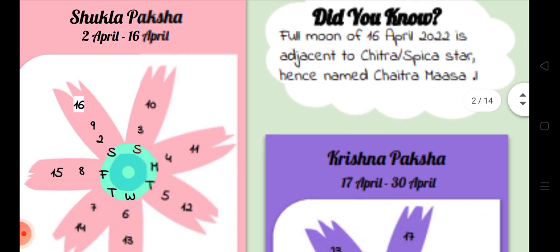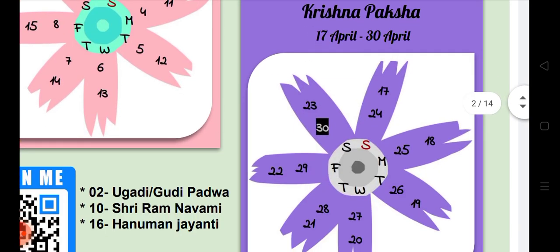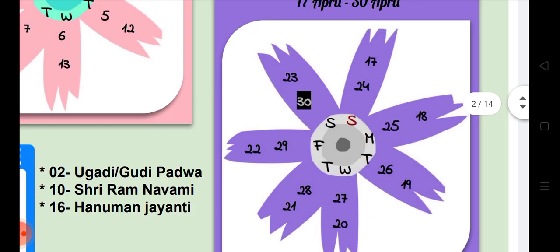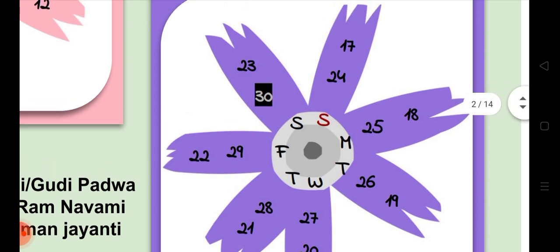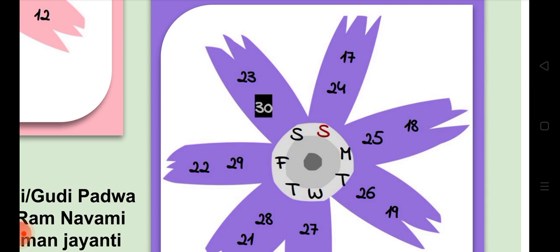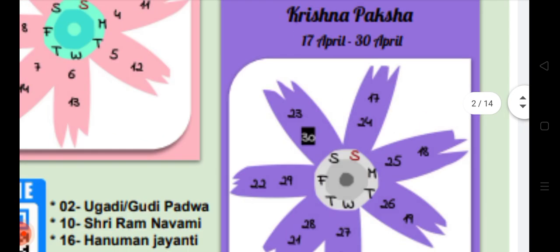Once the Shukla Paksha ends, we have the Krishna Paksha, which is shown as a purple flower. Again it has 7 petals, and here you will see that unlike Shukla Paksha, the days are coming more towards the center — meaning the 17th is on Sunday, then 18th, 19th, and so on. The end of Krishna Paksha is the 30th, which is highlighted in black, meaning it is the new moon or Amavasya.